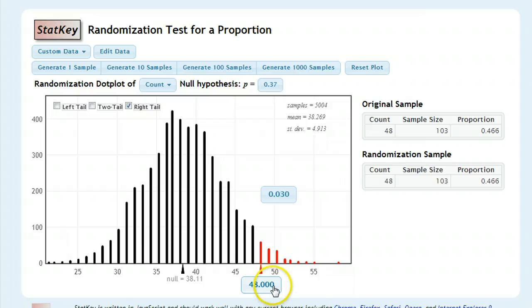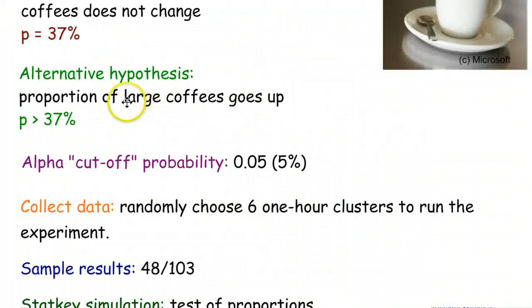And the reason I actually still had to change it, even though it had the right value typed in for me, is because it was setting it to be 0.025 up here. And it did not include all the dots in this row. So I want to make sure I just reset that. So I typed in my 48 down here, and I chose the right tail because I had a test that said the proportion of large coffee goes up.